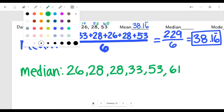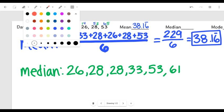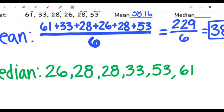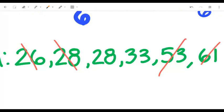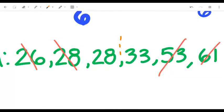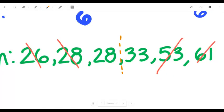So now my numbers are in order and I said you have to find the middle. Here's one strategy that I learned as a kid and it still works for me. If I want to find the middle, I'm going to start on the outsides and work my way towards the middle. So I'm going to cross off 26, that's not the median. Then I'm going to cross off 61, also not the median. Cross off 28, not the median. Cross off 53. Now if I cross off 28 and 33 at the same time, well then how in the world do I have a median?